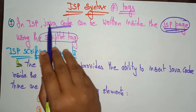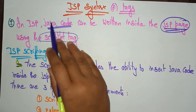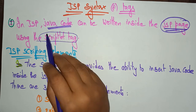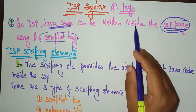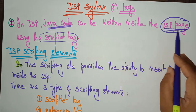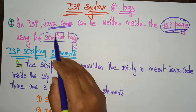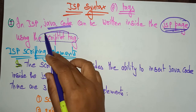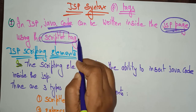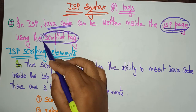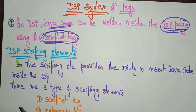In JSP, whatever Java code you have created can be written inside the JSP pages using the scriptlet tags. With the help of scriptlet tags, you insert the Java code into JSP pages.